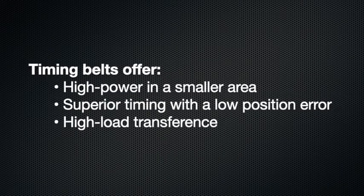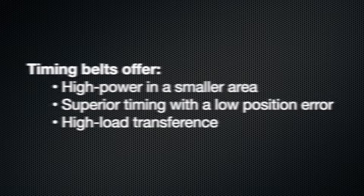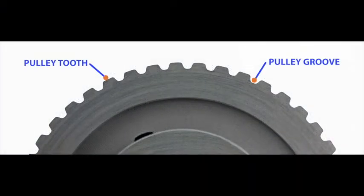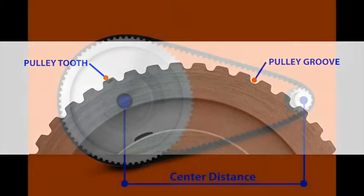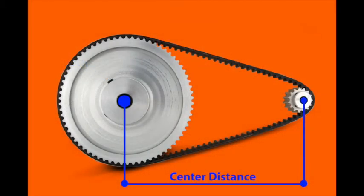Timing belts offer high power in a smaller area, superior timing with a low position error, as well as high load transference. Timing belts require two pulleys with grooves to transmit mechanical power across axles. They must also be separated by a minimum distance known as center distance.